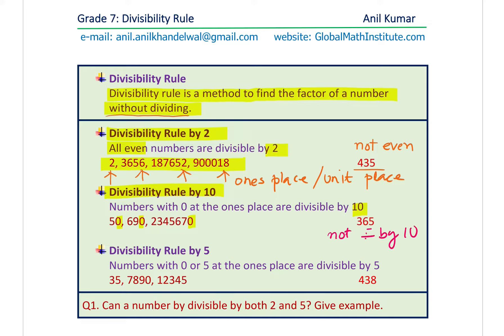About divisibility by 5: the ones digit should be 5 or 0 — either one of them. If 0 or 5 is the last digit, then you can divide the whole number, however big it may be, by 5. The examples show numbers which are not divisible: 435 is not divisible by 2, 365 is not divisible by 10, and 438 is not divisible by 5.